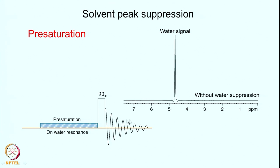One way to suppress the solvent signal is to do what is called a double resonance experiment, where you use a second RF and irradiate the solvent resonance. The second RF frequency matches exactly with the water resonance; therefore you put that RF there with a reasonably high power so that it only affects the energy levels corresponding to the water, and all the other signals present are not affected to a reasonable approximation. The water signal will get saturated; all other signals will not be perturbed.